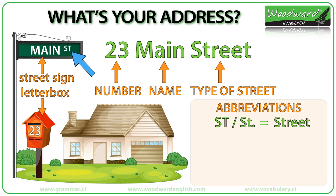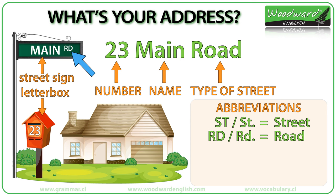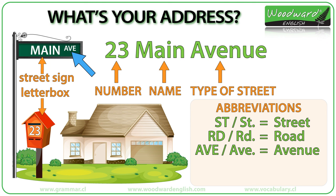There are different types of streets. The most common types of streets and their abbreviations are: ST is for street, RD is for road, and Ave or A-V-E is for avenue. For example, 23 Main Avenue.